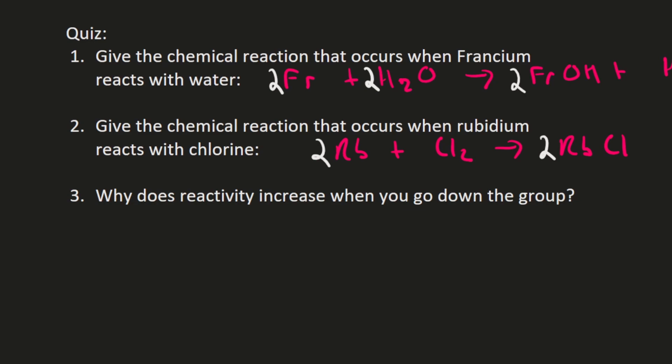Question number three: why does reactivity increase when you go down the group? As we explained, when you go down the group, the distance between the nucleus and the outer shell electron increases, it becomes easier to lose that electron, and therefore the atom becomes more reactive because that's how Group 1 elements react. Hopefully that makes sense and I'll see you guys in the next one.